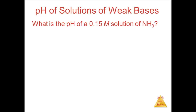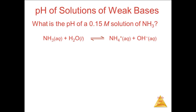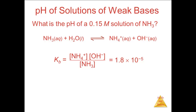Let's do an example of a pH calculation of a weak base. What is the pH of a 0.15 molar solution of NH3? We do the same things we do when calculating the pH of a weak acid. First, we write the equilibrium reaction: the hydrolysis of NH3. NH3 plus H2O in equilibrium with NH4+ plus OH-. The equilibrium expression is KB equals the concentration of NH4+ times the concentration of OH- over the concentration of NH3. The value of KB for ammonia is 1.8 × 10⁻⁵.